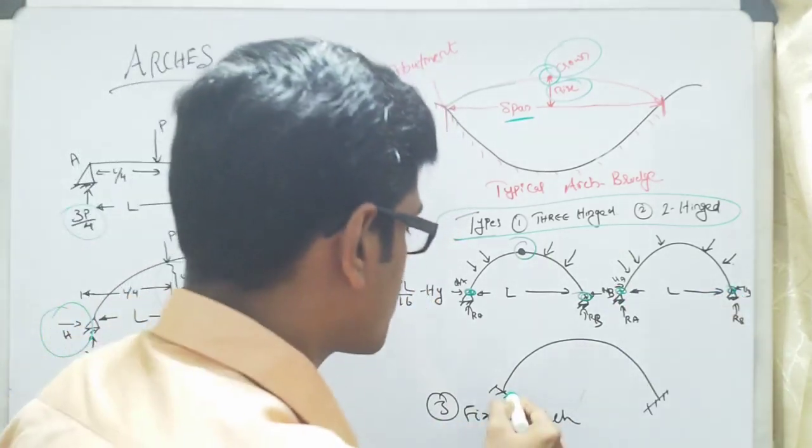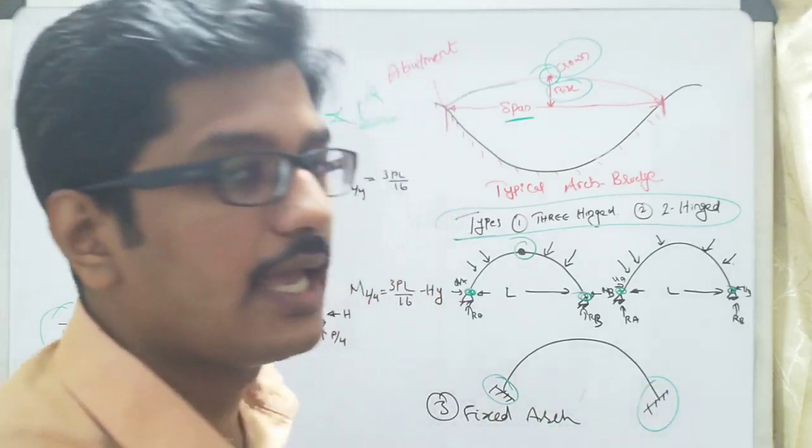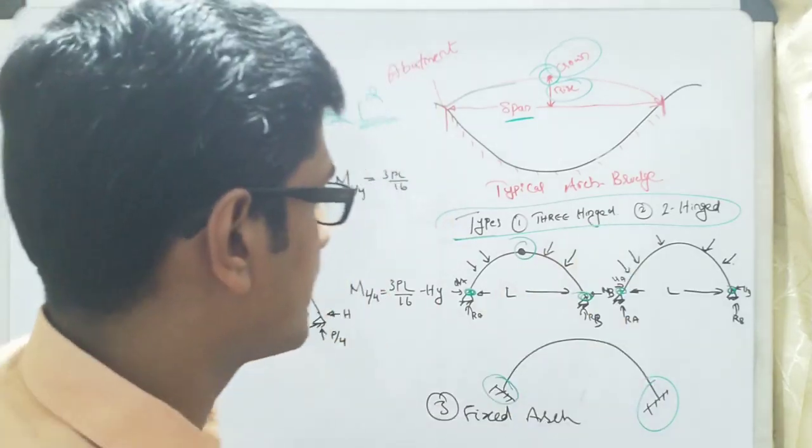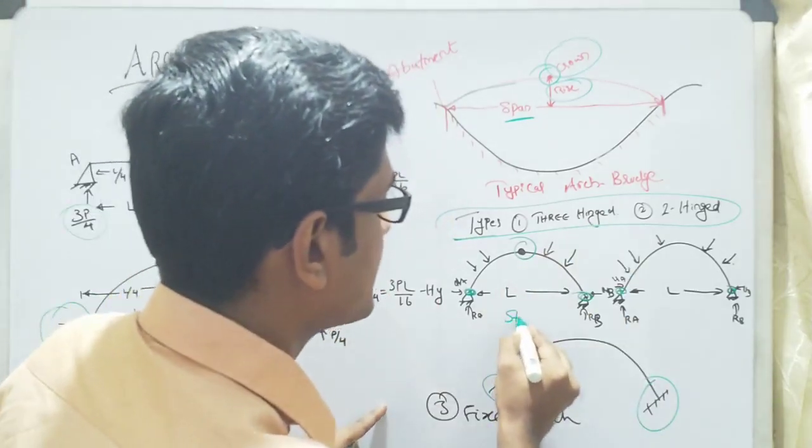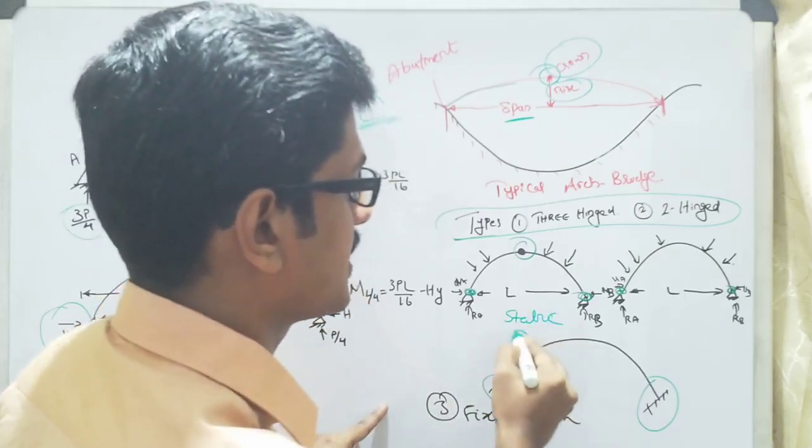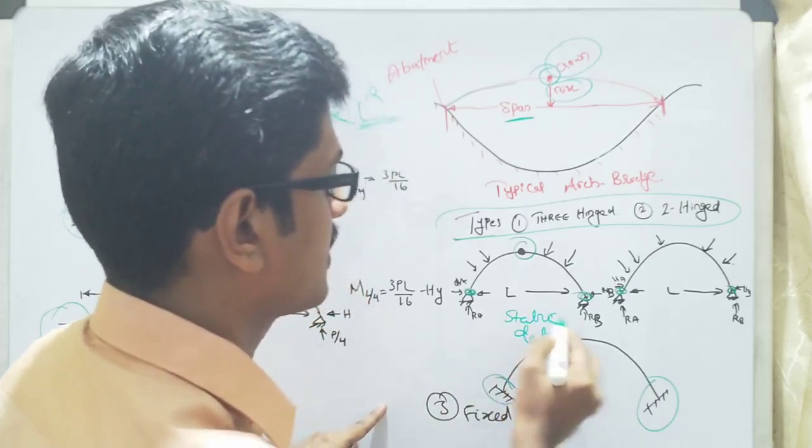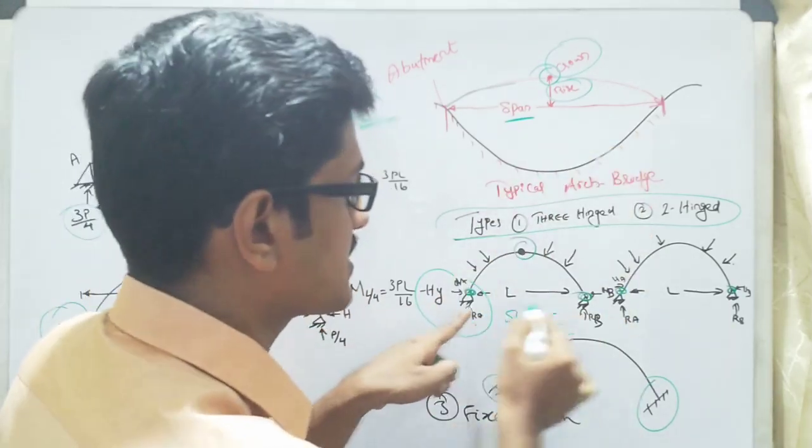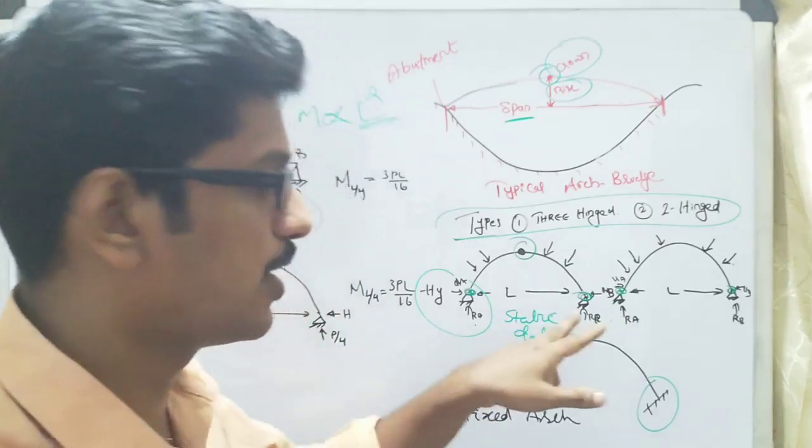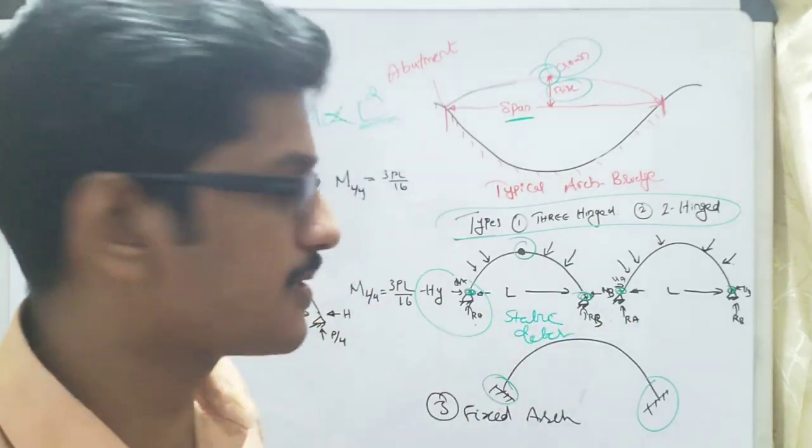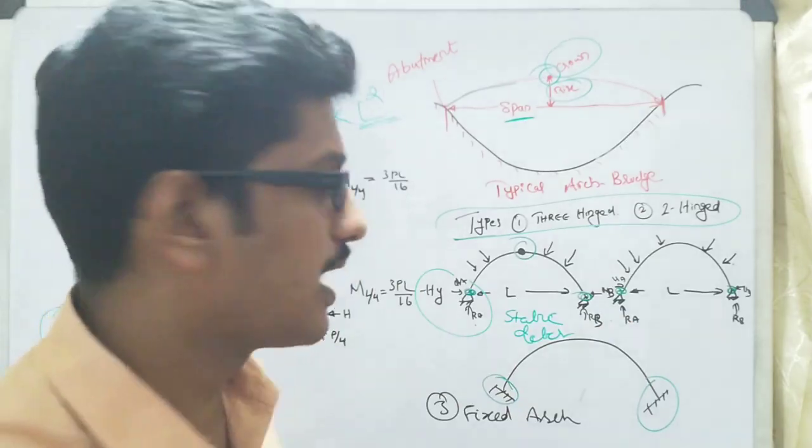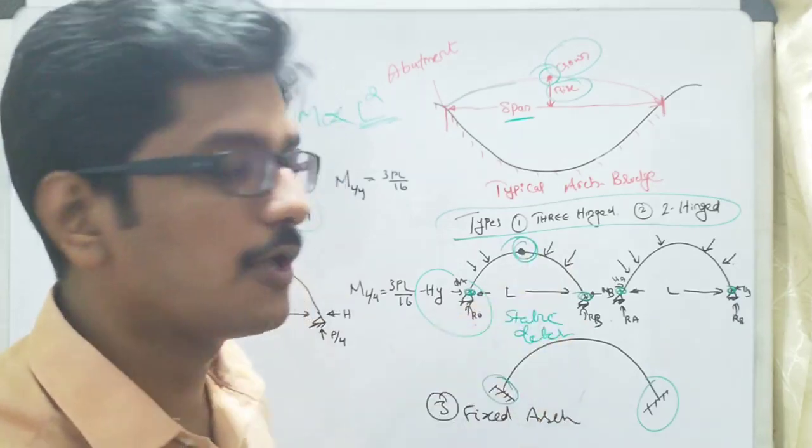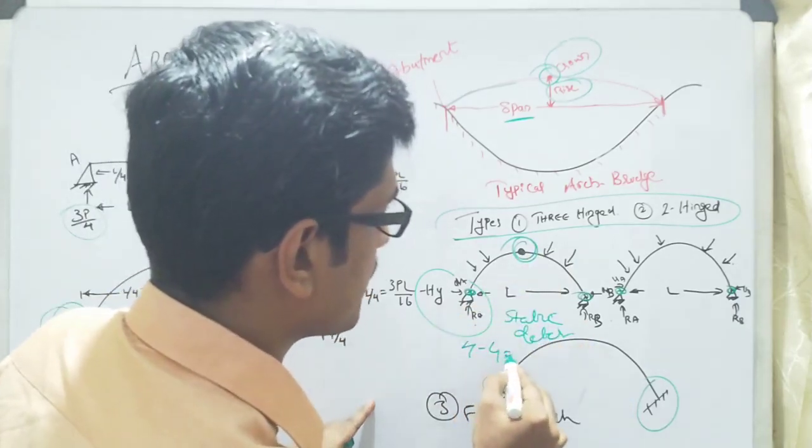In the case of fixed arch, both ends will be fixed, or we can say it as a hingeless arch. Compared with three-hinged and two-hinged, the three-hinged arch is a statically determinate structure. If you consider different loads acting here, there will be two reactions and here also two reactions, so 2 plus 2 equals 4. Number of equilibrium equations is 3, and the hinge also provides one equation, so total 4 minus 4 equals 0.